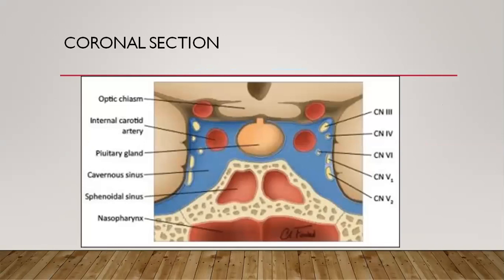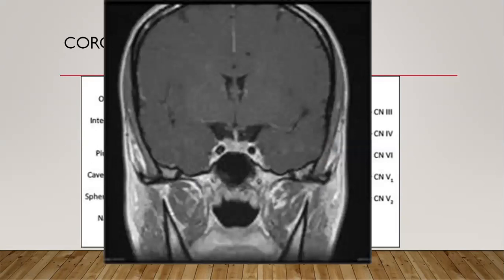If you take a coronal section in the area of the sella — the part of the skull where the pituitary is located — you will see something like this. You've got your optic chiasm on top, then the pituitary gland, the pituitary stalk, the sphenoidal sinus, and the nasopharynx. The cranial nerves are visible in the wall of the cavernous sinus — the third, fourth, fifth, and sixth, and the V1 and V2 segments of the fifth nerve — and this is the internal carotid artery curving around this area.